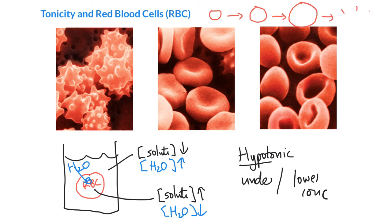Of course at some point, so much water can go in that the cells can go pop. These red blood cells have essentially burst open and are not looking very healthy at all. This is called crenation, by the way — crenation is when this happens.